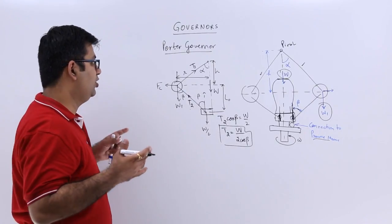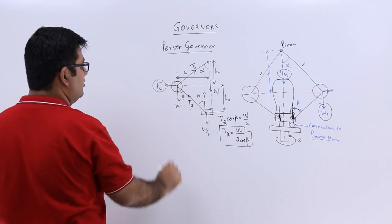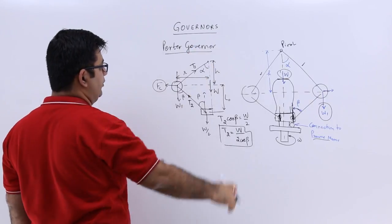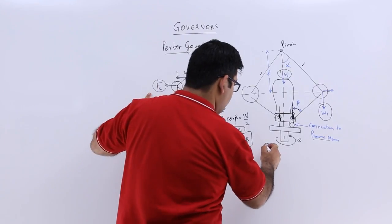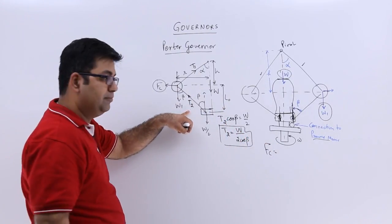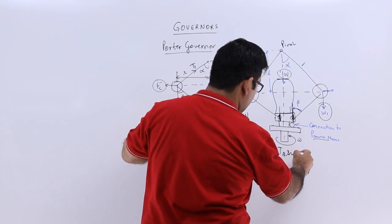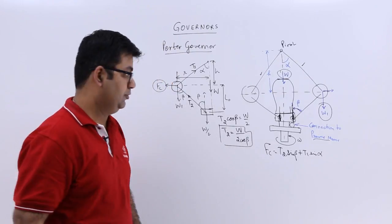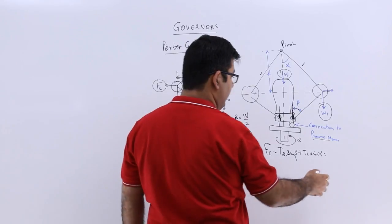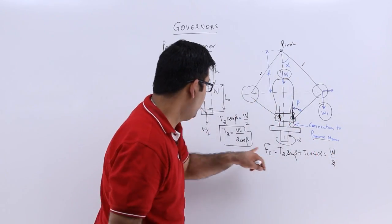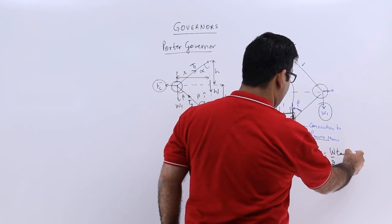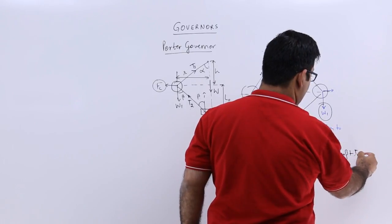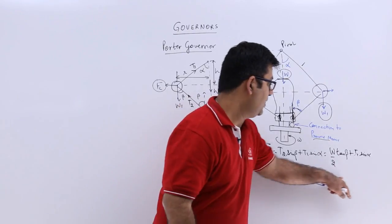Now let's resolve the forces in the horizontal direction. In the horizontal direction you have a force Fc, then you will have the sine component of T2 and the sine component of T1. So you get: Fc = T2·sin(β) + T1·sin(α). Now T2 is W / (2·cos(β)), so substituting: T2·sin(β) = (W/2)·tan(β). This gives Fc = (W/2)·tan(β) + T1·sin(α).